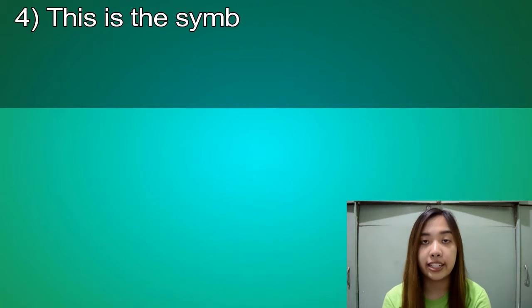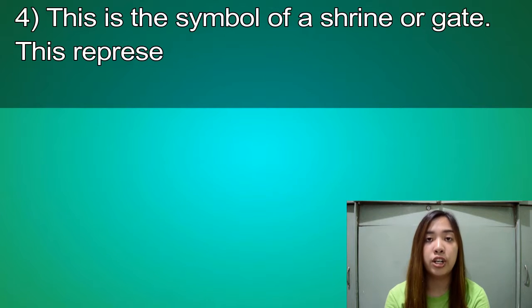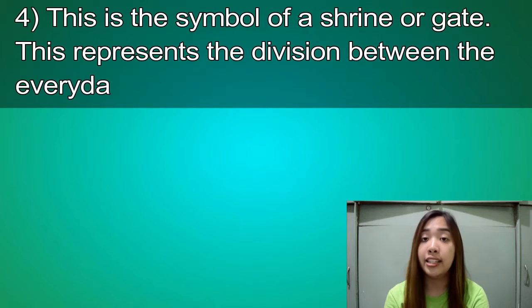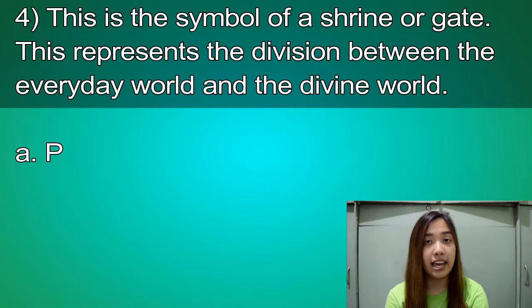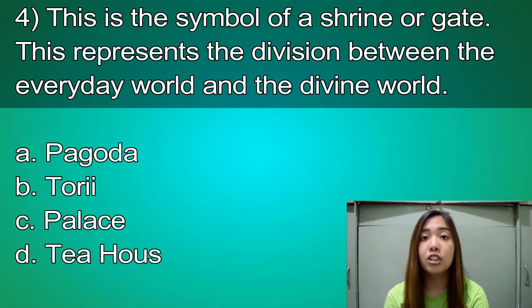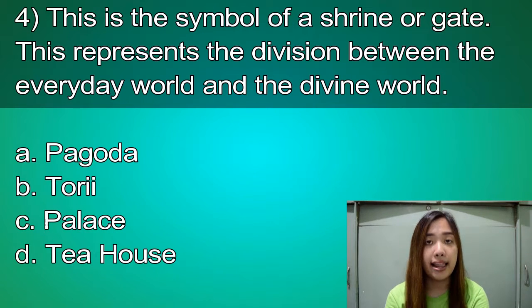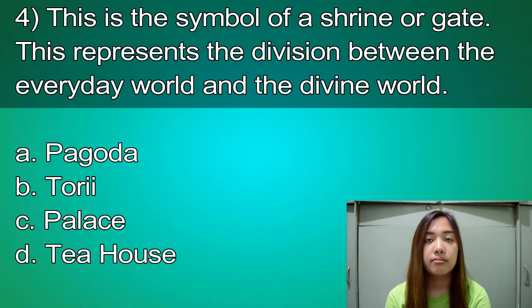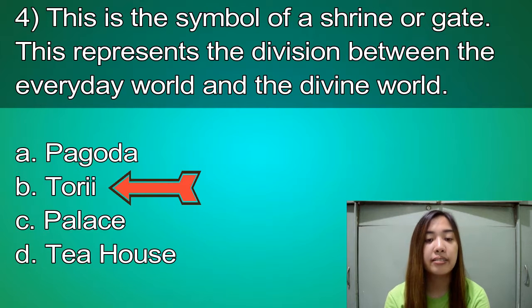Number 4. This is the symbol of a shrine or gate. It represents the division between the everyday world and the divine world. Is it A. Pagoda, B. Torii, C. Palace, or D. Tea House? Time's up. The correct answer is B. Torii.